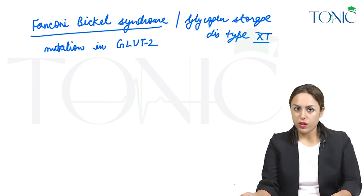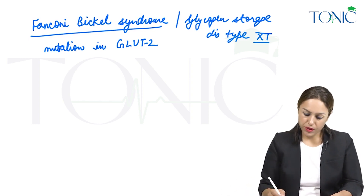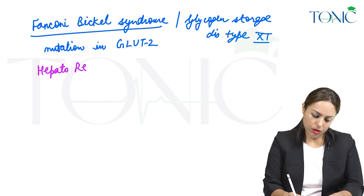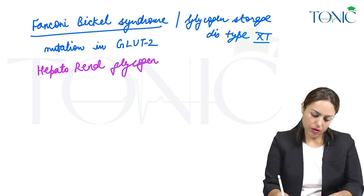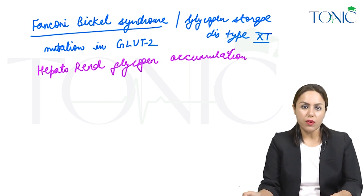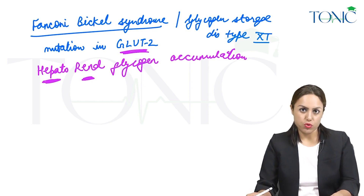This number is given to it because there is glycogen stored in this disease, and there is hepatorenal glycogen accumulation which occurs. GLUT2 is present in the liver and it is present in the kidneys also — that is why.